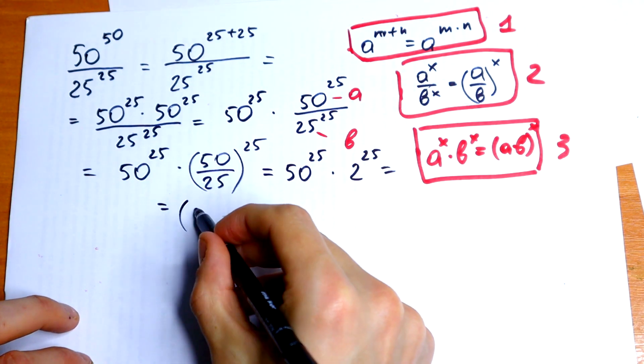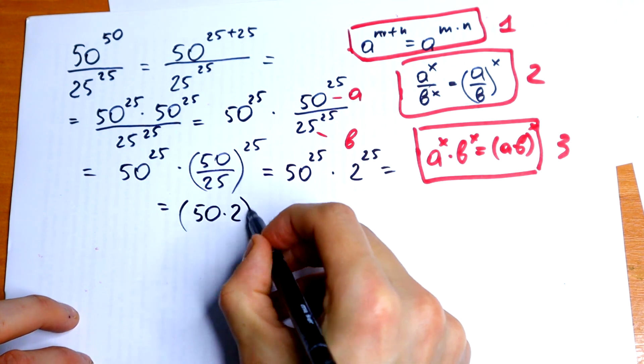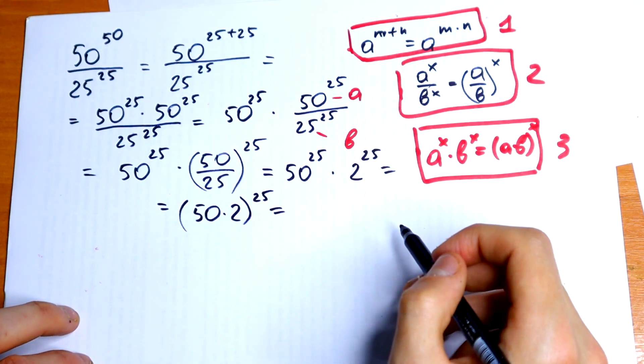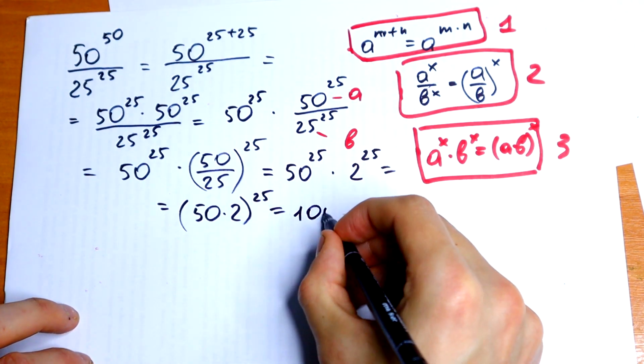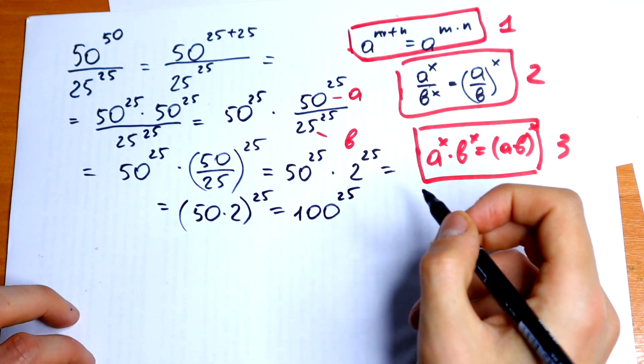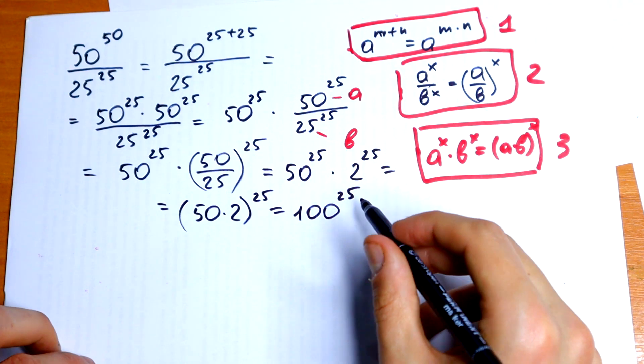I will receive 50 times 2 all raised to the 25th power. So I will get 100 to the 25th power, and this is our answer.